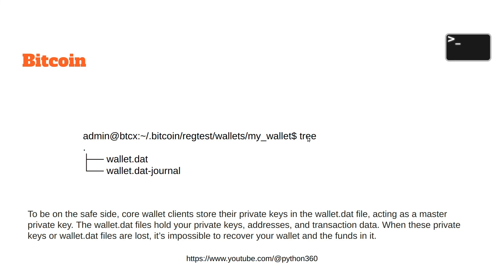If you do tree and don't have it available, you'll need to install it — on Linux use sudo apt-get install tree, or brew install tree on Mac. You'll see wallet.dat and wallet.dat-journal. Core wallet clients store their private keys in the wallet.dat file, acting as a master private key. The wallet.dat files hold your private keys, addresses, and transaction data. When these files are lost, it's impossible to recover your wallet and the funds in it.